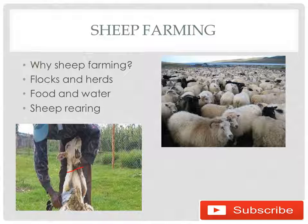Sheep require food and water so that they can give fine quality wool. Sheep eat grass twice a day as they are herbivorous animals. Sheep rearing involves removing the fleece of sheep with the help of clippers or scissors, as it is not possible by hand, and then processing it to obtain wool or different fabrics.